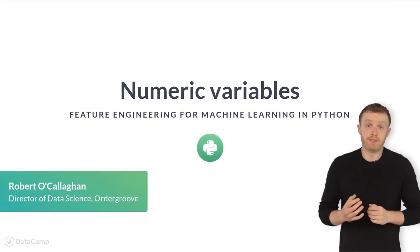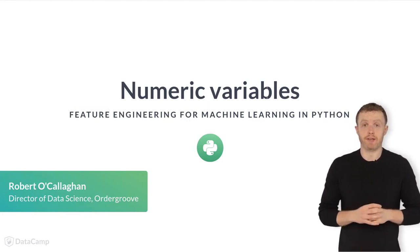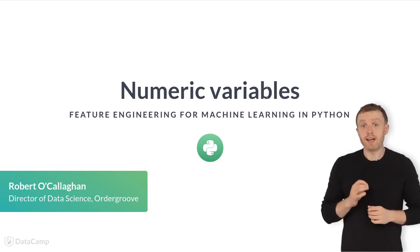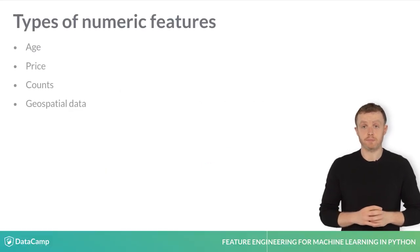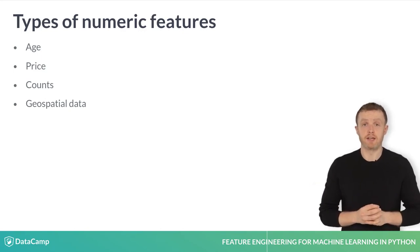As mentioned in the previous lesson, most machine learning models will require your data to be in numeric format. However, even if your raw data is all numeric, there is still a lot you can do to improve your features. Numeric features can be used to represent a huge array of different characteristics and measurements.